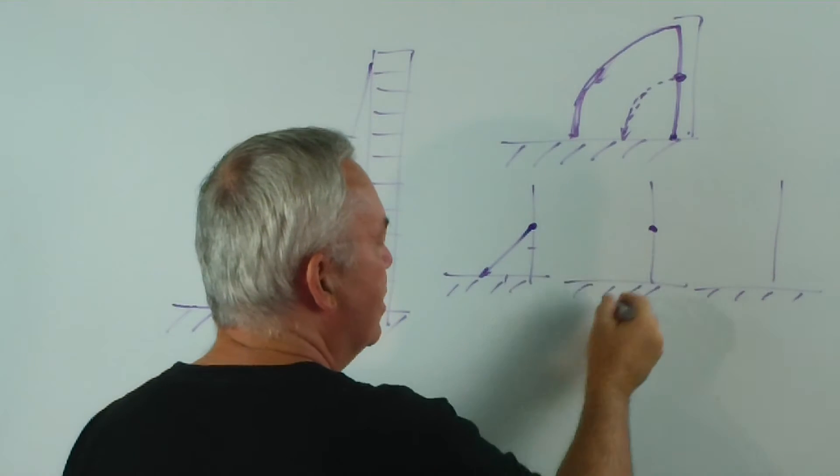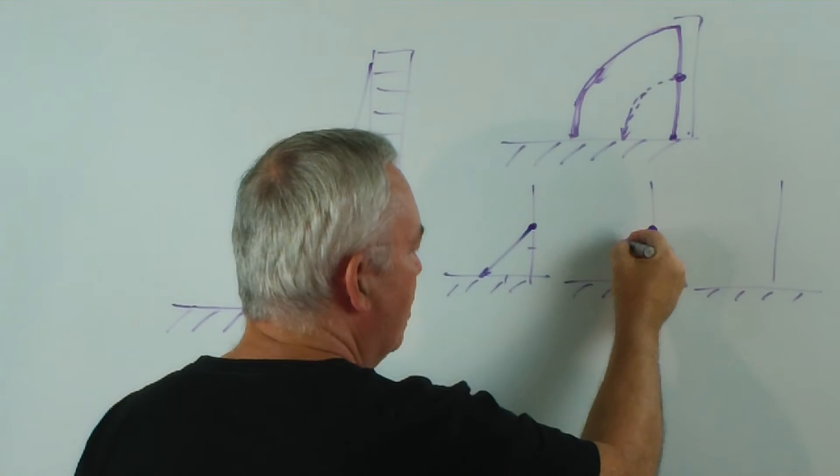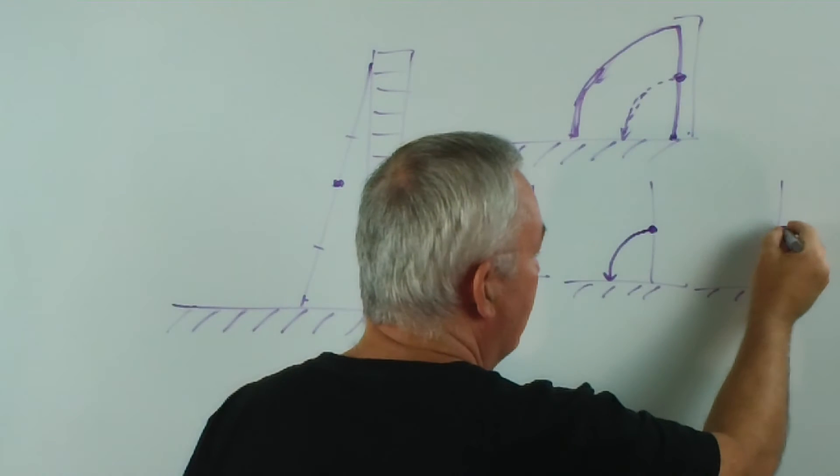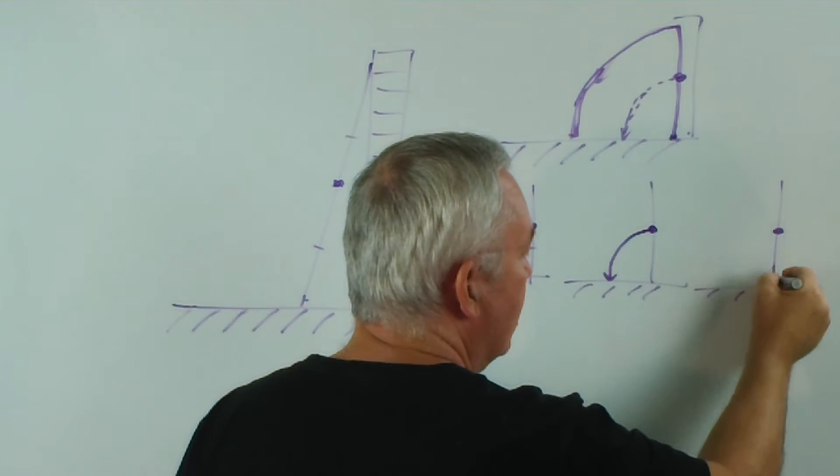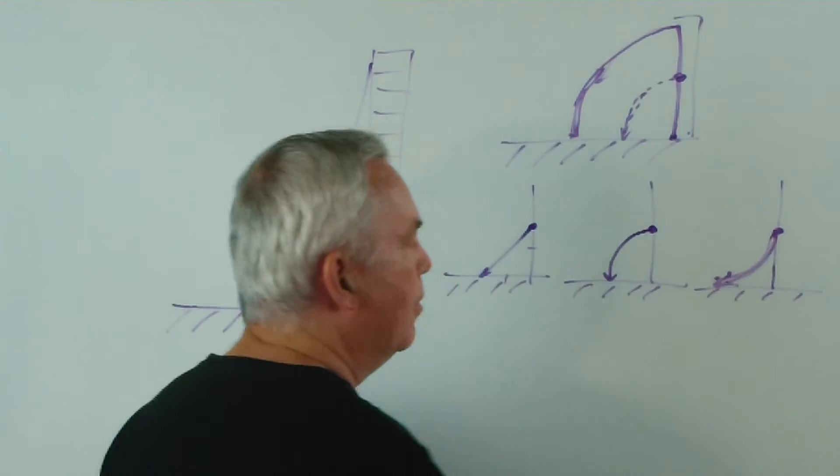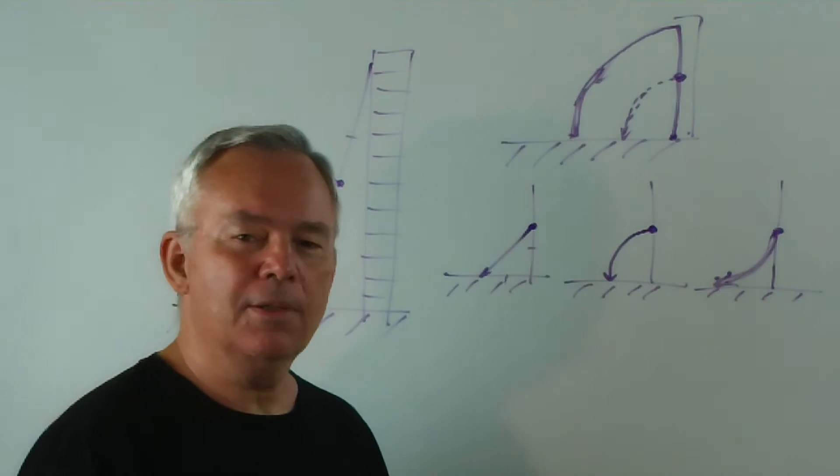The second one is that the middle rung of the ladder might follow an outward curve, and the other option is that it might follow a curve like this. So the question is, which of these occurs?